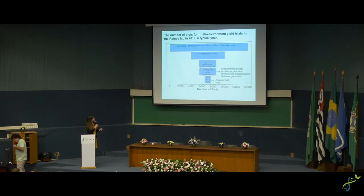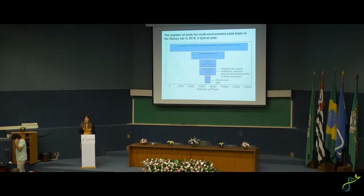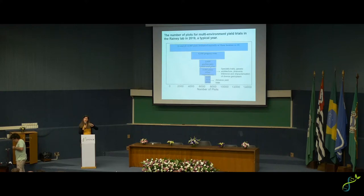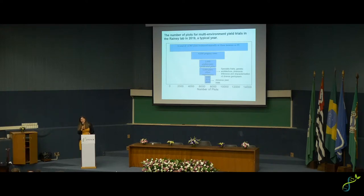We have a lot of experiments that aren't in the breeding pipeline around genetics. It is a breeding pipeline, and it's a good infrastructure to leverage for doing phenomics, because we're already collecting a lot of information. In a breeding pipeline, there's a lot of phenotypic variation for yield, which I'm going to talk about.